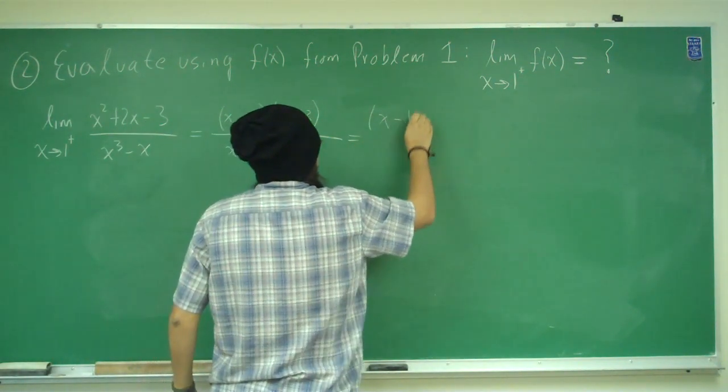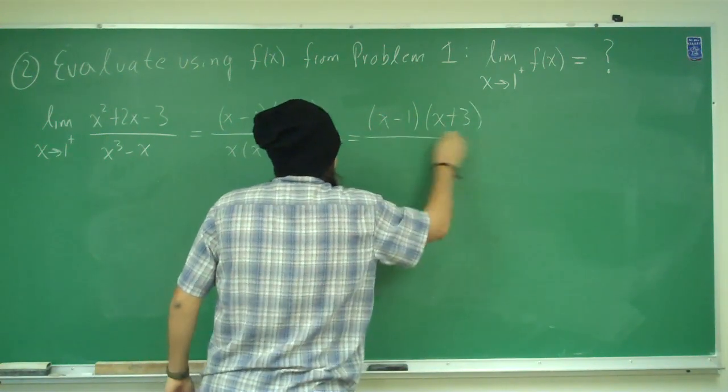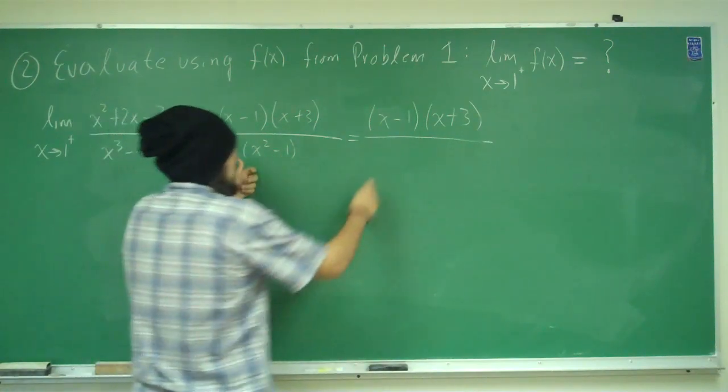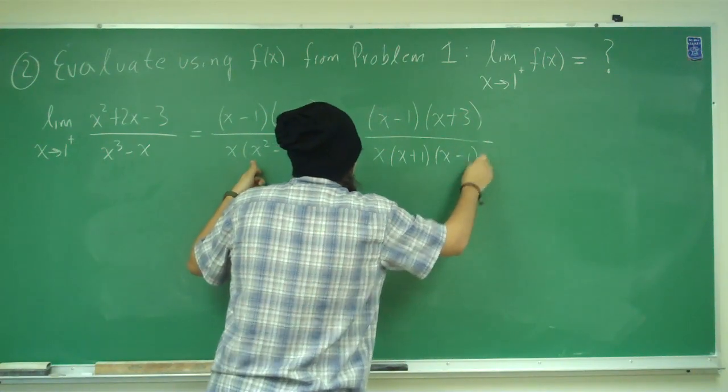Top stays the same, alright, so we factor here, x squared minus 1, difference of squares, so we have x, x plus 1, x minus 1.